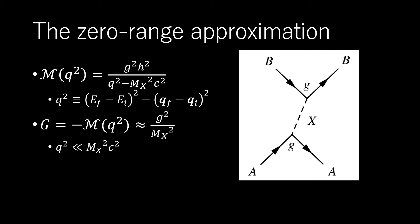The amplitude corresponds to the exchange of a single particle, as shown for example in the figure. In the zero-range approximation, M reduces to a constant.